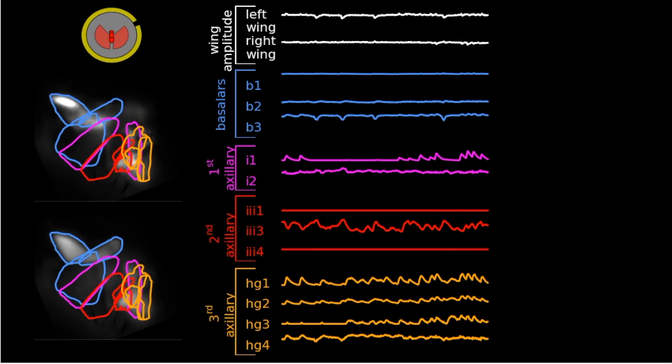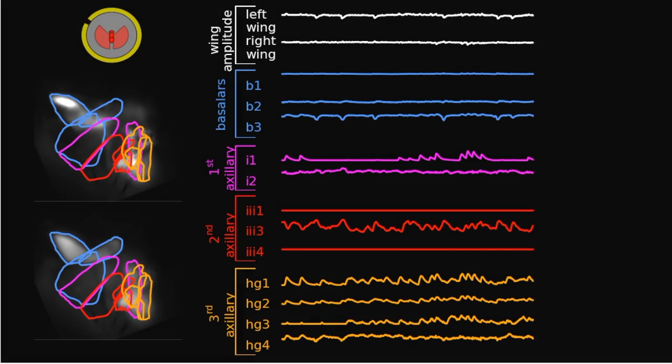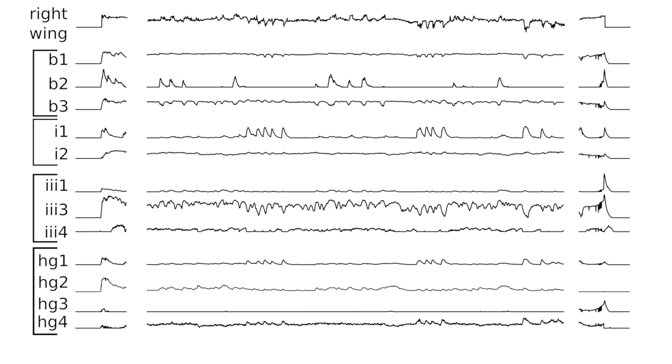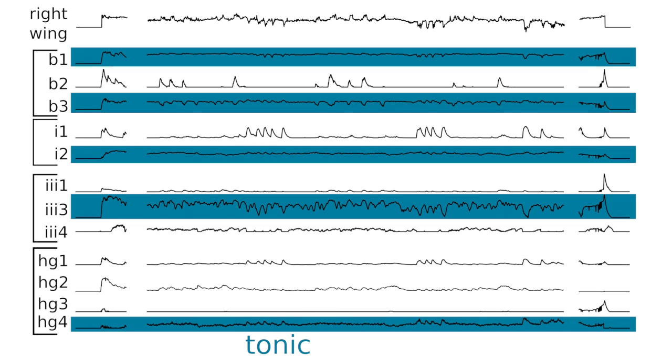After examining the data from all 12 muscles and comparing them to measurements of wing motion, we discovered that the direct flight muscle system could be classified into two groups based on their activity. One group, which we call tonic, exhibited high levels of sustained activity throughout flight.